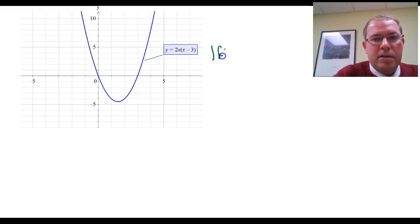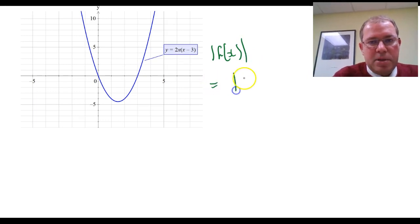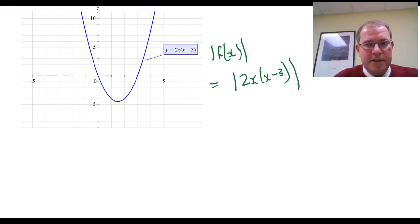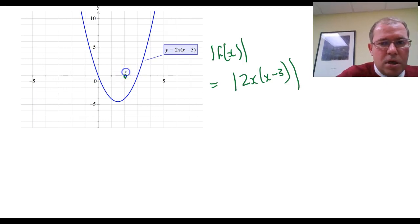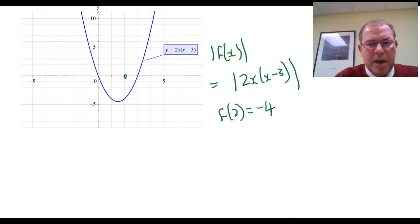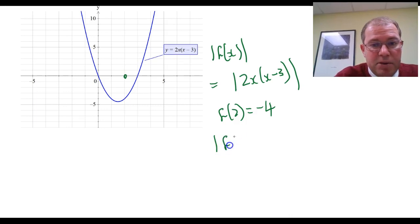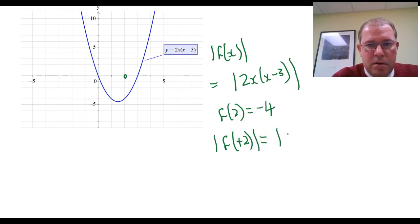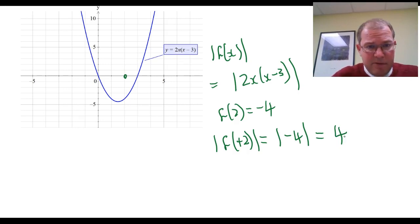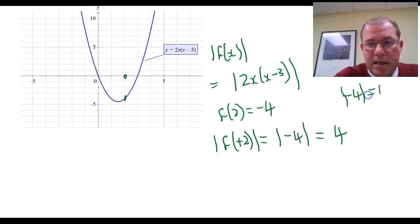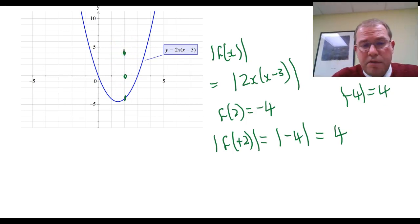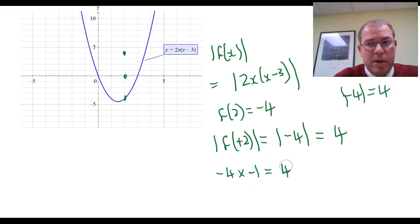Let's start by considering the absolute value of f of x. This function would be the absolute value of 2x times (x minus 3), for the graph on the left. Let's consider the point x equals 2. When we input 2 into f, the output we can see from the equation or the graph is minus 4. The absolute value of f of positive 2 is equal to the absolute value of minus 4, which gives positive 4. So what's happening is it's taking the negative y value of minus 4, taking the absolute value of that, and changing it into a positive y value — which is a reflection across the x-axis. Another way of thinking about it is you're multiplying minus 4 by minus 1 to make it positive when doing the absolute value function.